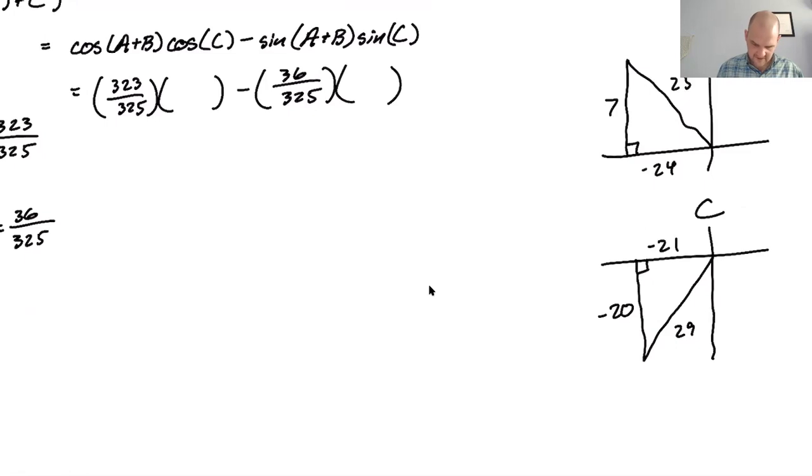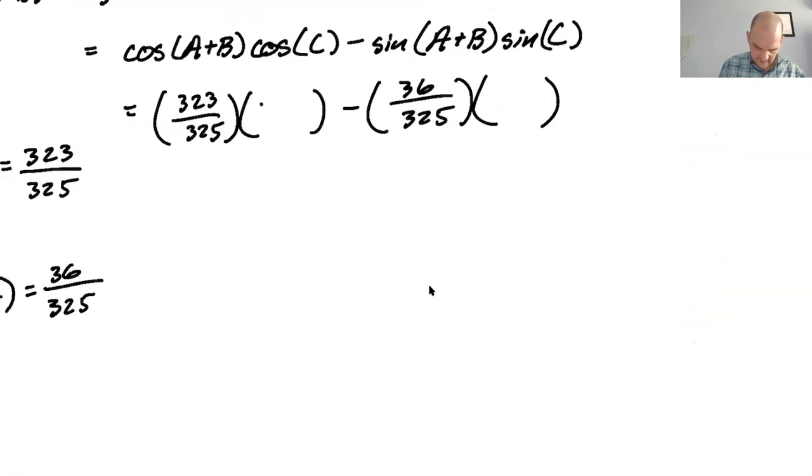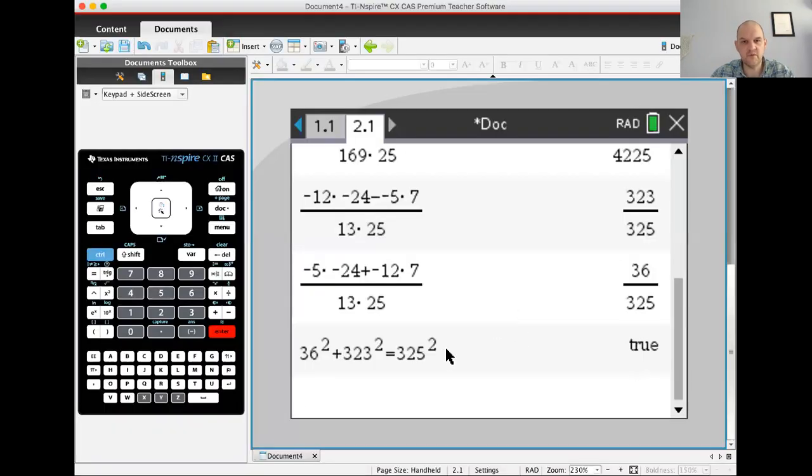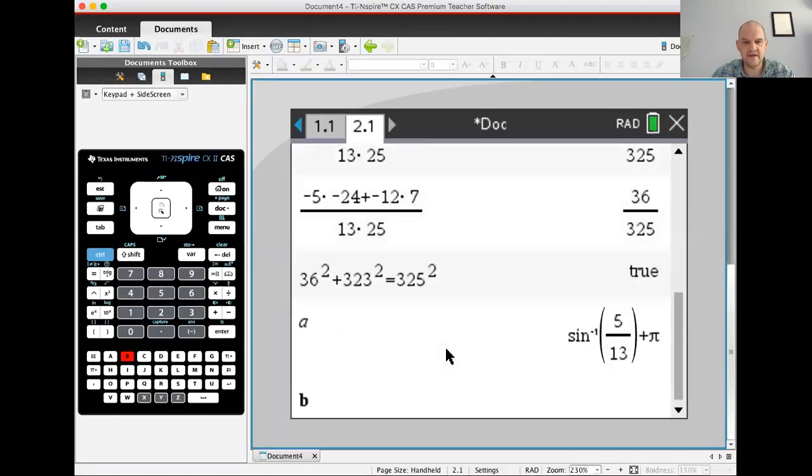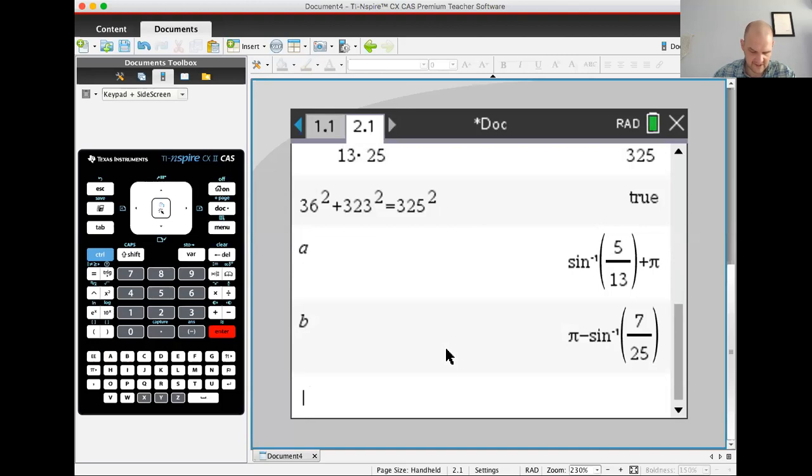And then we're going to use a calculator anyway. So C is down here. So cosine is negative 21 over 29. And then sine is negative 20 over 29. There's going to be a huge denominator, maybe 20 over 29, probably a big numerator too. All right. So calculator, and then I'm going to have to define C. C is going to be, it's in quadrant three. So pi plus arc tan of 20 over 21.